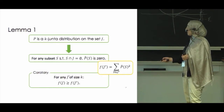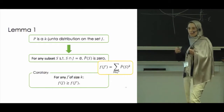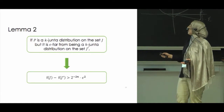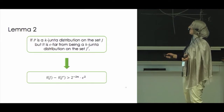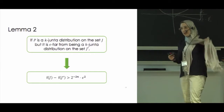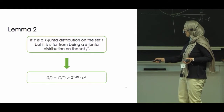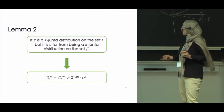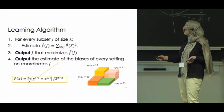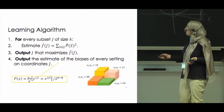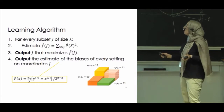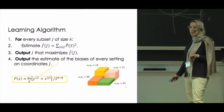This is not enough on its own, because we only estimate F of J and need to show there is a gap. We show that if P is a junta distribution on the set J but is epsilon far from being a junta distribution on some other set J prime, then F of J minus F of J prime is at least some guaranteed value — meaning there is a gap between the value for the correct J and any wrong J. The algorithm then iterates over all possible subsets J, computes the estimate of F of J, outputs the one that maximizes this value, and because there is a gap, rules out all wrong answers.